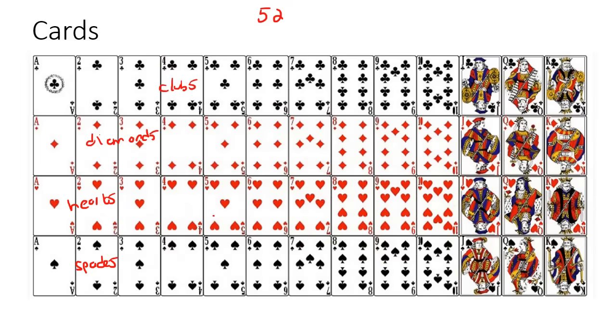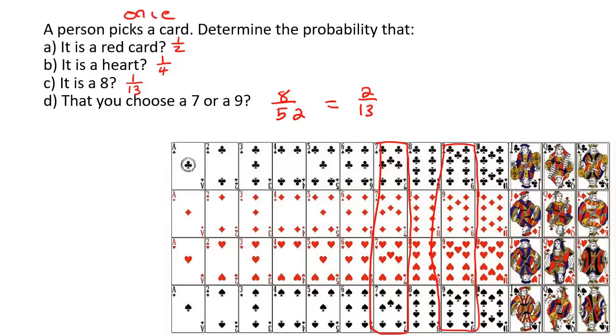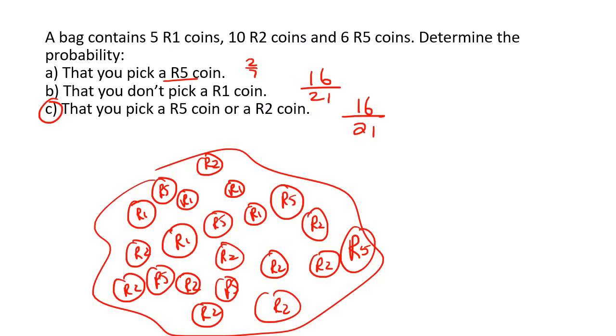Everything we looked at in this lesson was all about single events. In our next lesson, we're going to start looking at what happens when you do two things — but I'll get into that in the next lesson; I don't want to overwhelm you. Everything we did here, we were only doing one thing at a time — we didn't pick a coin and then pick another coin straight away. Everything was one at a time.